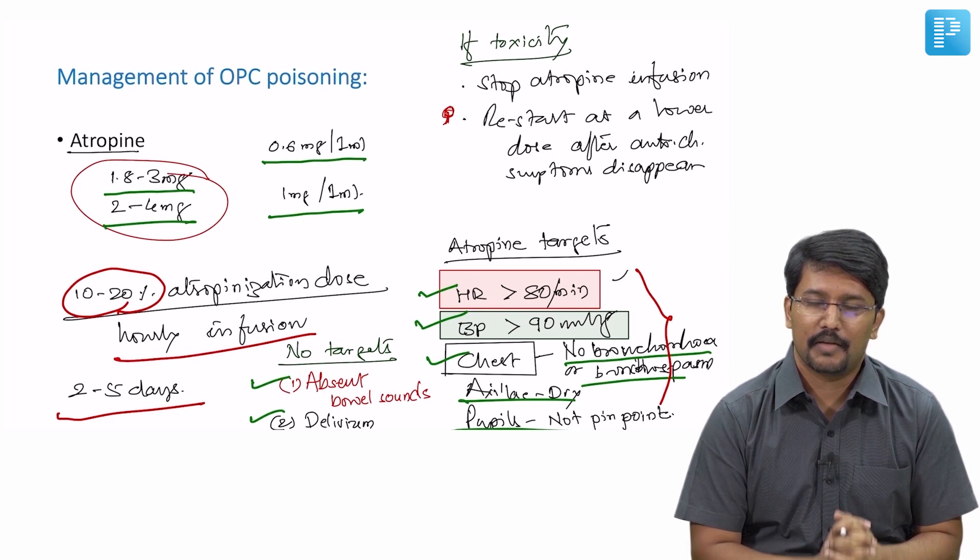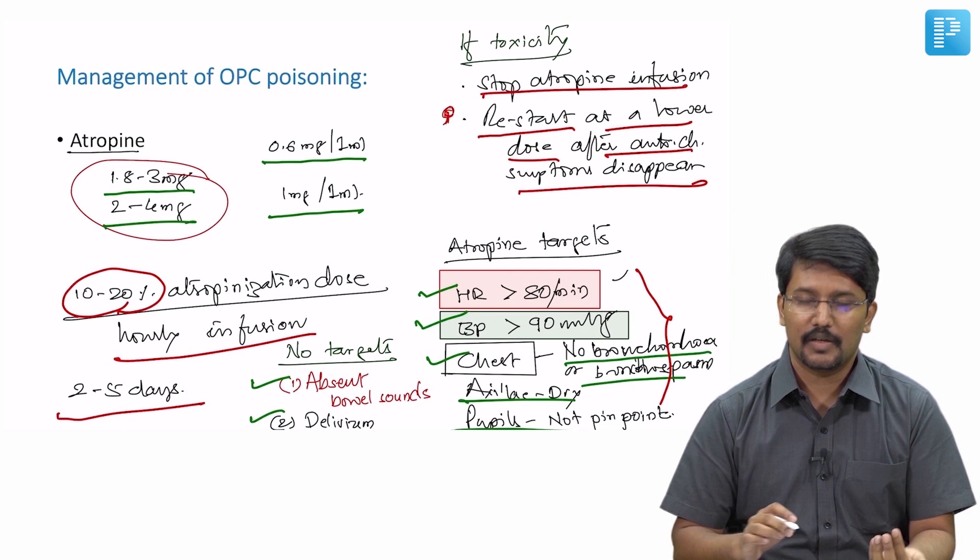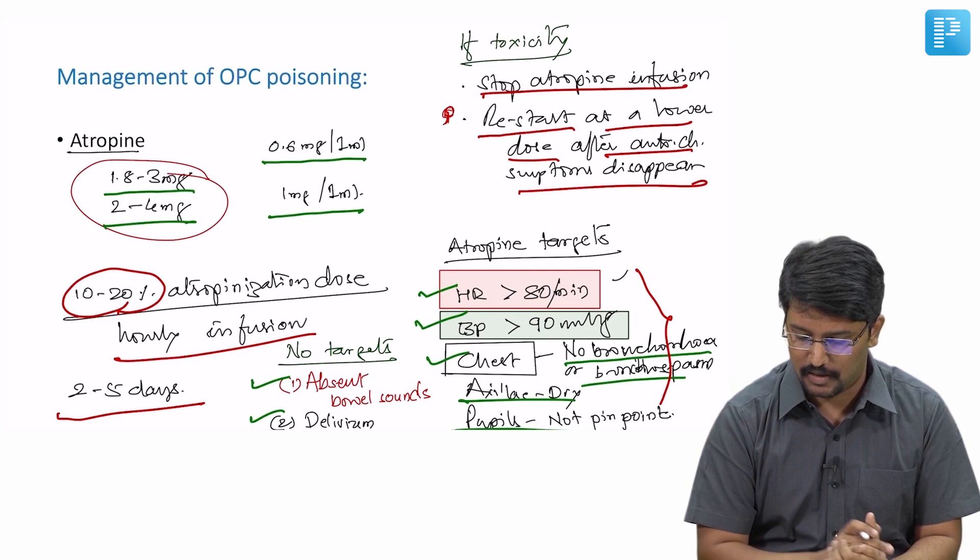So in that case, how would we manage if a patient develops atropine toxicity? We should stop atropine infusion and we can restart atropine infusion at a lower dose once the toxicity symptoms disappear. So if patient has developed delirium, stop the atropine infusion, wait for the delirium to subside, and then start at a relatively lower dose than what you were previously giving.